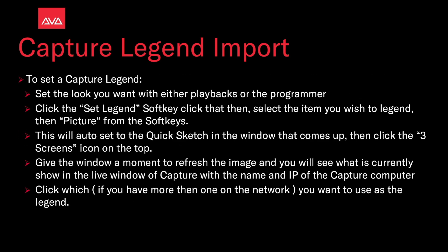This does not work with the internal Capture in Titan. To set a Capture Legend, set the look you want on either playbacks or through the programmer. Click Set Legend on the soft key, then select the item you wish to legend, and then Picture from the soft keys. This will auto-set to quick sketch in the window that comes up. Then click the three screens icon at the top, give the window a moment to refresh the image, and you will see the live window of Capture with the name and IP of the capture computer. Click whichever you want to use as the legend if you have more than one on the network.